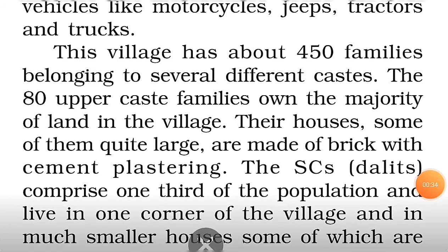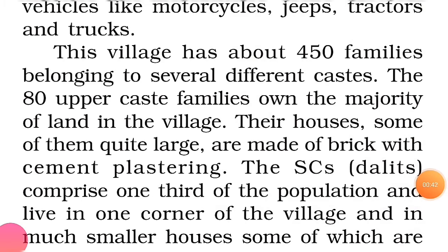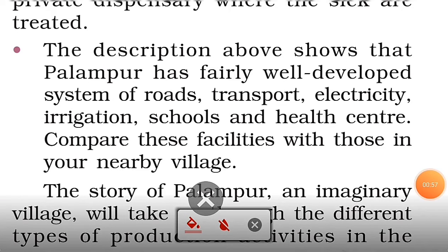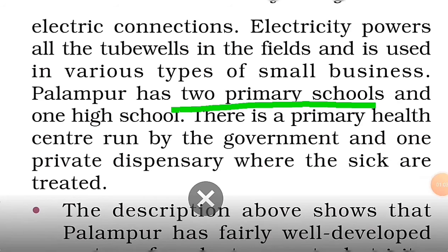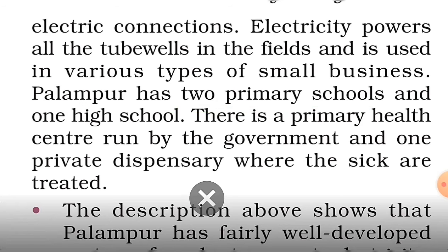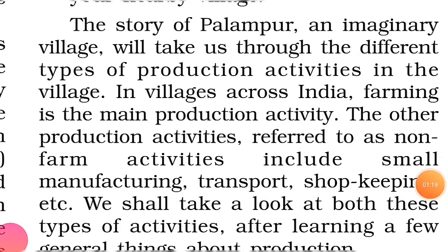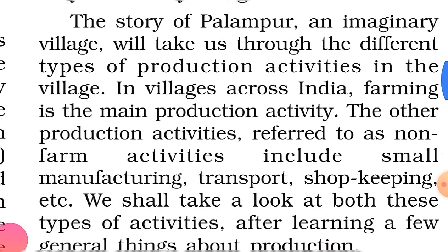In this village, 450 different caste families are living here. Out of them, 80 upper caste families have a land majority in this village. One third of the total population is covered by scheduled castes. Most of the houses have electricity also. This village has two primary schools, one high school, a primary health center run by the government, and one private dispensary. You can also find here non-farm activities including small manufacturing, transport, and shop keeping.